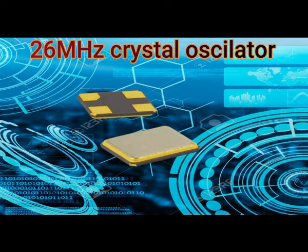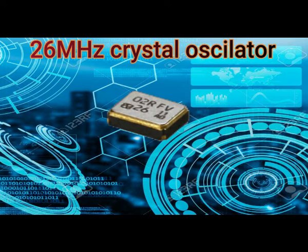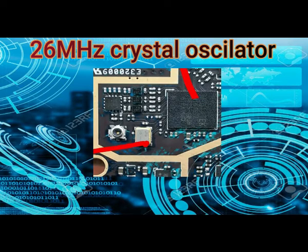The 26 MHz Crystal Oscillator is easy to identify. It is also known as the network crystal and is found around the PFO in the network section. You will observe that this component is mostly shiny and has a metallic makeup. It is this component that creates the frequency that makes an outgoing call possible when a user is engaged on a call.